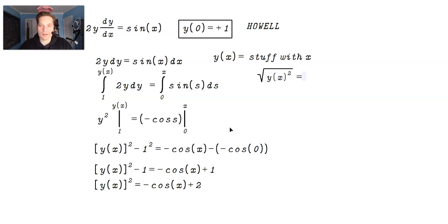So √([y(x)]^2) is equal to, and then you really at first would have a ±√(2 - cos(x)). You can write it as 2 - cos(x), not important, either way is fine.